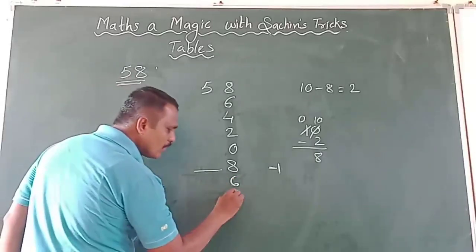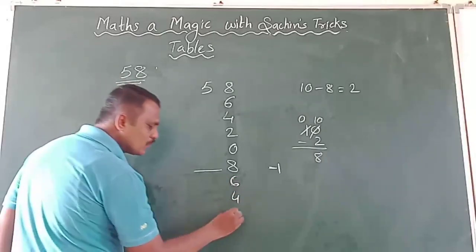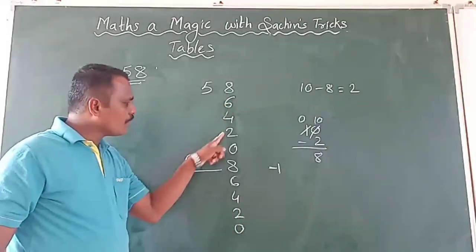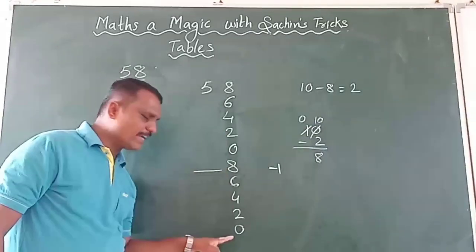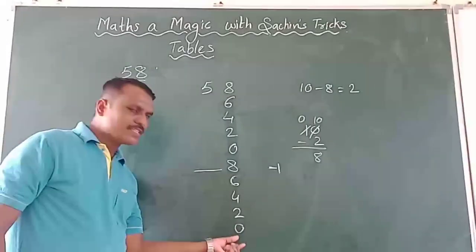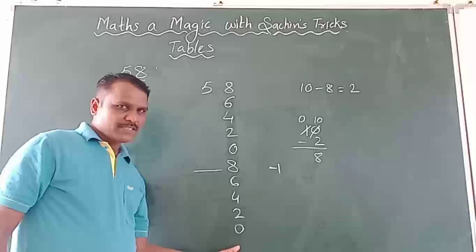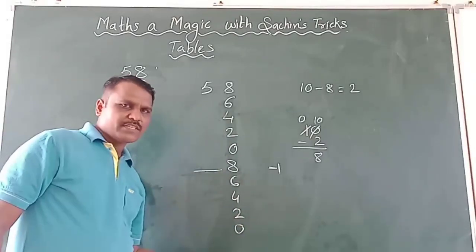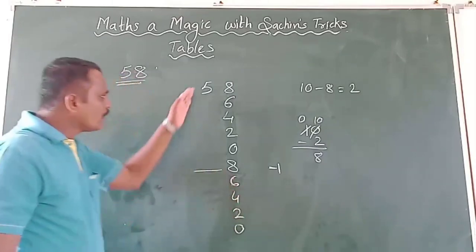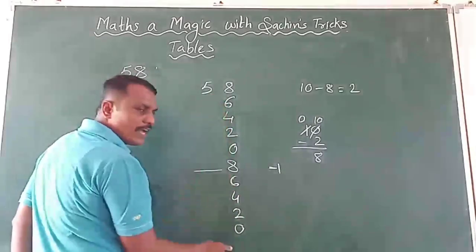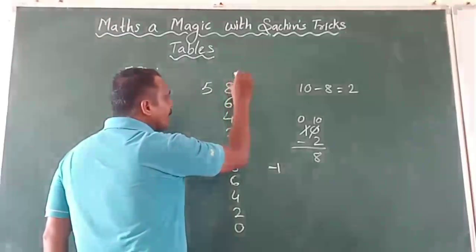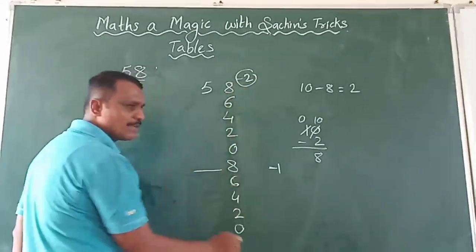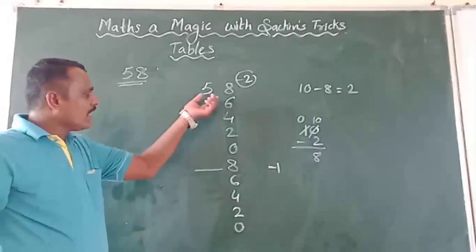Then continuing: 8 minus 2 is 6, 6 minus 2 is 4, 4 minus 2 is 2, 2 minus 2 is 0. Count this — 1, 2, 3, 4, 5, 6, 7, 8, 9, 10 times done. Normally 0 comes at the 10th place. When you get 0, check whether you have done it 10 times. So at the unit place I have done subtraction of 2.